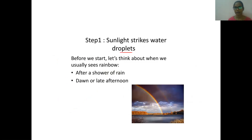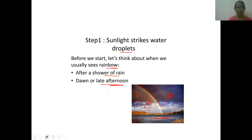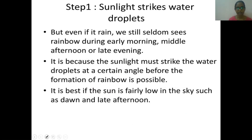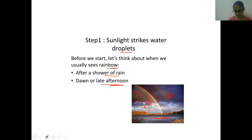The sunlight strikes the water droplet. Before we start, we usually see the rainbow — you can see it in the picture. This is the first rainbow with very high intensity, and the second rainbow has less intensity. After a shower of rain, small water droplets are still required to form a rainbow. And the next condition is dawn or late afternoon — around 3 o'clock or 4 o'clock — we observe this. Two conditions are required: sun and rain droplets of water.